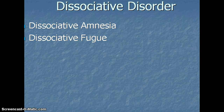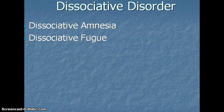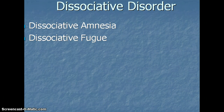The next one is dissociative fugue. This is when a person has a stressful event and they flee to a different area — a different part of the country — take up residence, and assume a new identity. They do not remember anything about their past and can't tell you how they got there. If you show them a picture and say 'this is who you really are,' they'll say 'no, that's not me — I've always been here, and I don't know who that person is.'